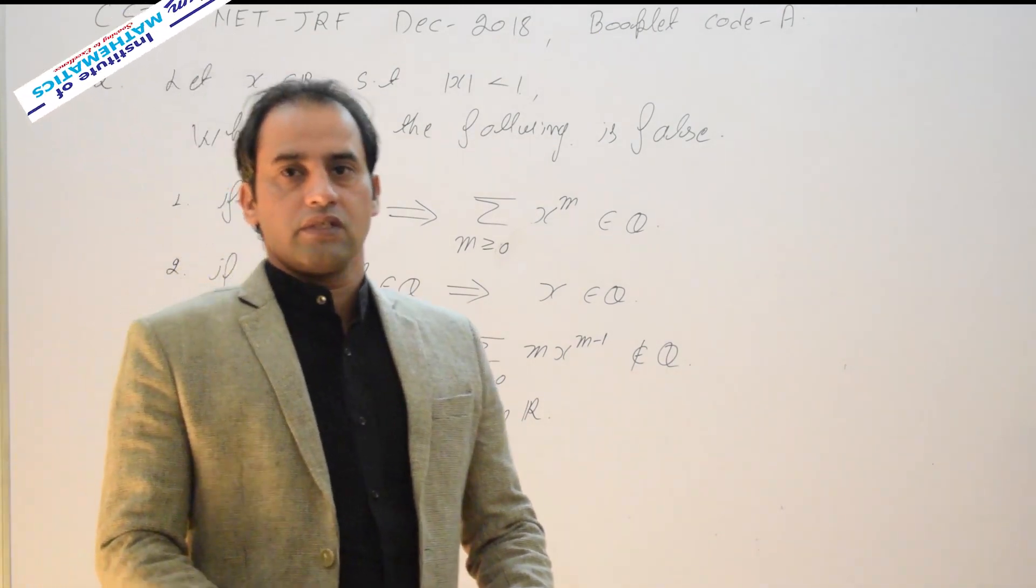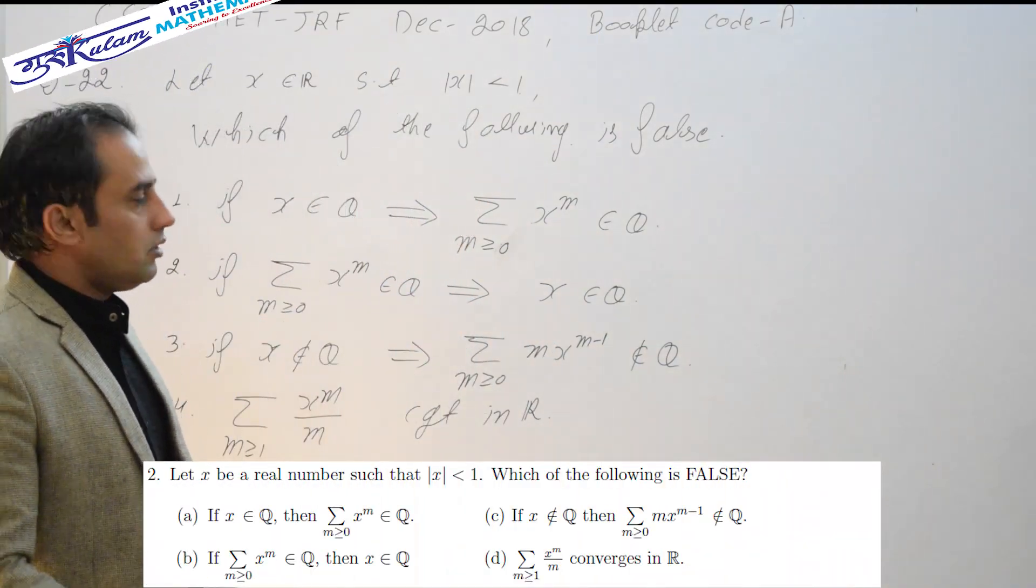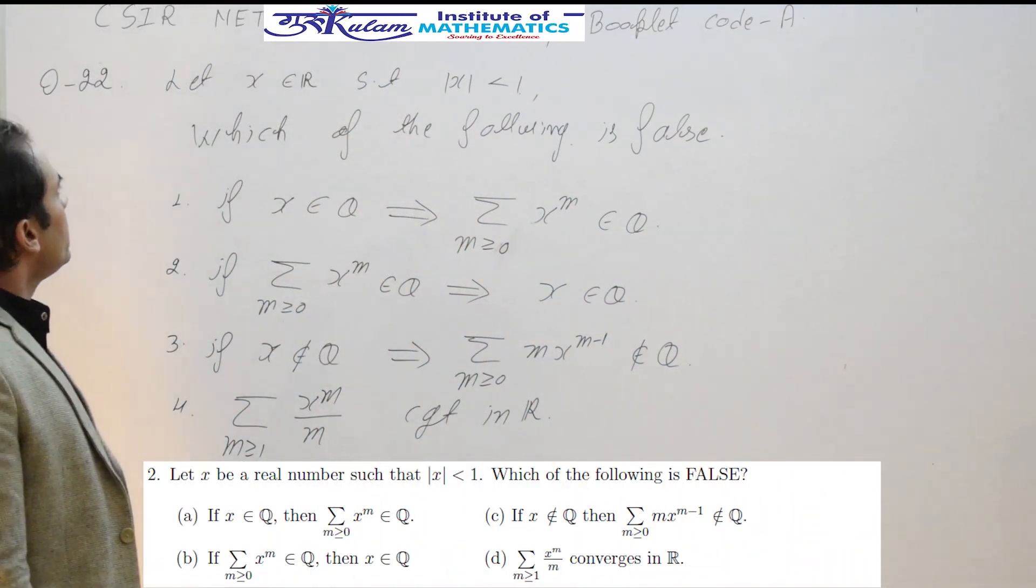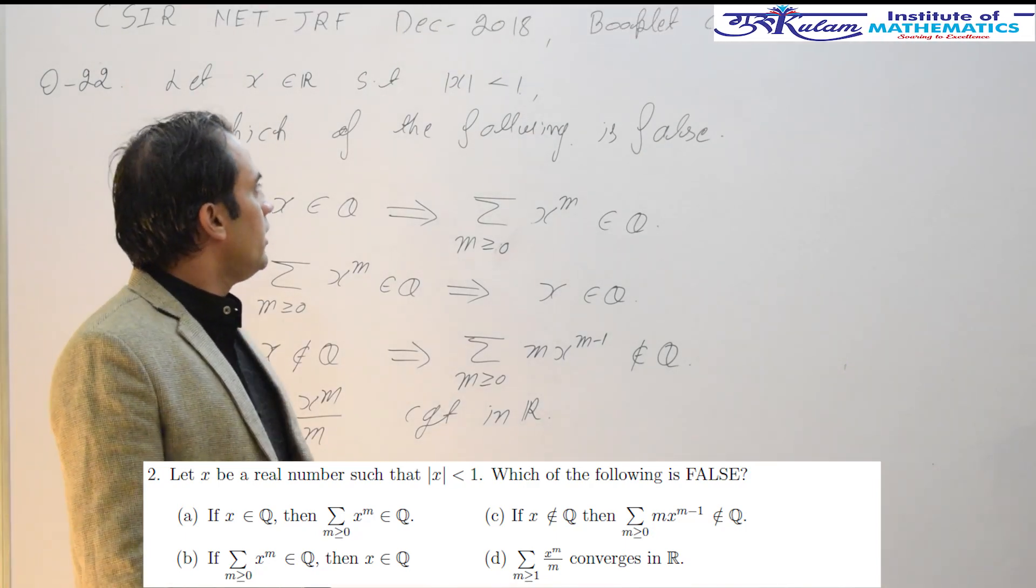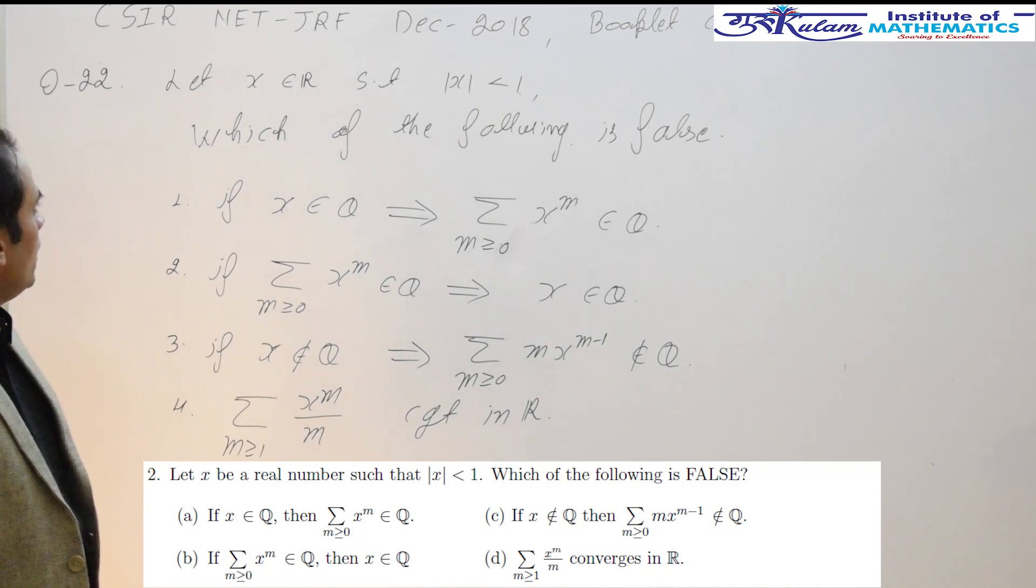In this lecture, we are going to discuss question number 22 in CSIR NET JRF December 2018. This is in booklet code E, question 22. Again, the question is from real analysis.